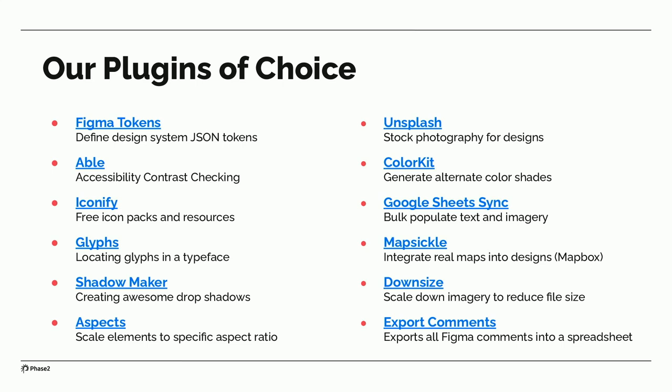Here is my penultimate slide — some plugins of choice. We've seen a few already: Figma Tokens, Able, and others. The downsize plugin is useful when working with a huge design system with a lot of imagery and icons — it globally downsizes all the images to make the file much smaller and more performant. Export Comments is another one I use a lot: while we want to keep all feedback in Figma, this plugin is great if the client wants all comments exported into a spreadsheet — one click generates an Excel document you can use as a Google spreadsheet.